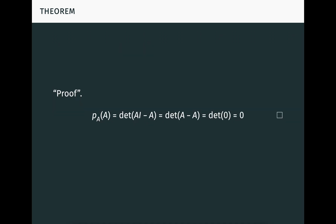When you first see this theorem, it's tempting to give the following one-line proof. P_A of A, by substitution of A for x in the definition of P_A, is just the determinant of AI minus A. But AI equals A, so that's just the determinant of A minus A, which is the determinant of zero, which is zero. Easy, right? What's all the fuss about?